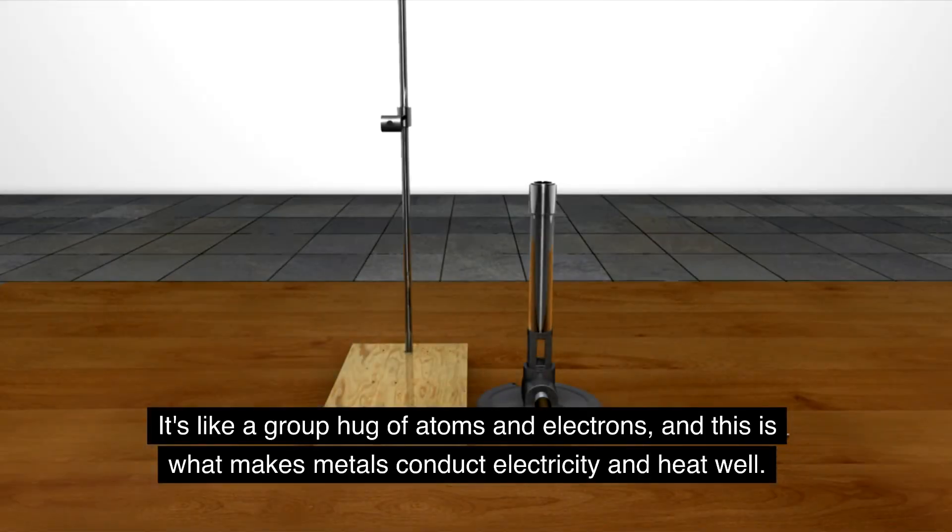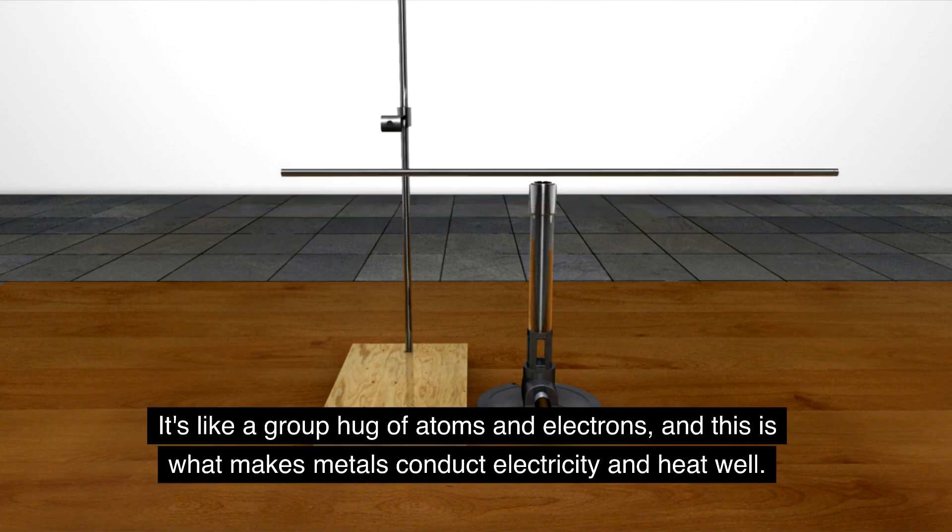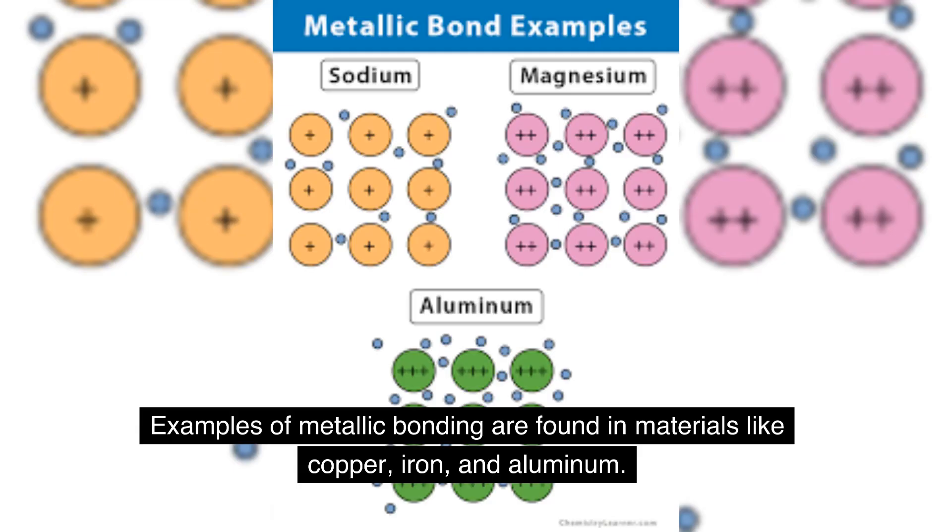It's like a group hug of atoms and electrons, and this is what makes metals conduct electricity and heat well. Examples of metallic bonding are found in materials like copper, iron, and aluminum.